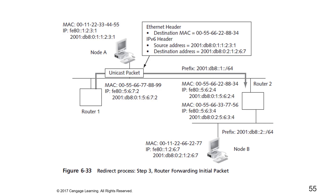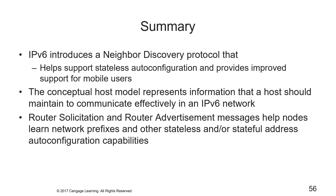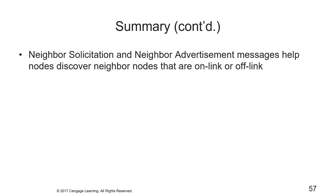To summarize the big points: IPv6 introduces the neighbor discovery protocol, which helps support stateless autoconfiguration and provides improved support for mobile users. The conceptual host model represents information that a host should use to maintain effective communications in an IPv6 network. Neighbor solicitation and neighbor advertisement messages help nodes learn network prefixes, address autoconfiguration capabilities, and discover neighbor nodes that are either on-link or off-link. That is all for this week.